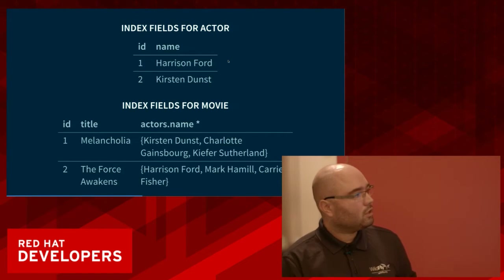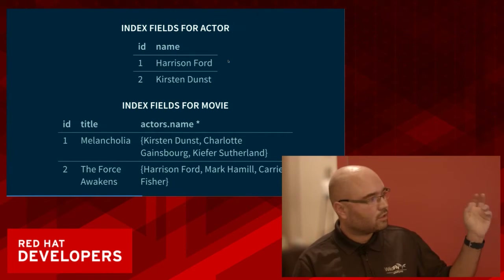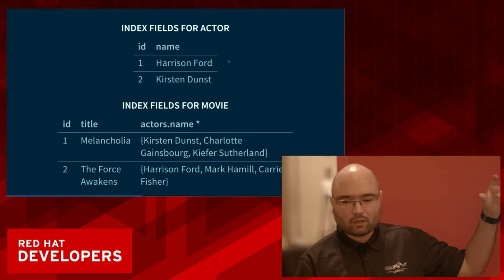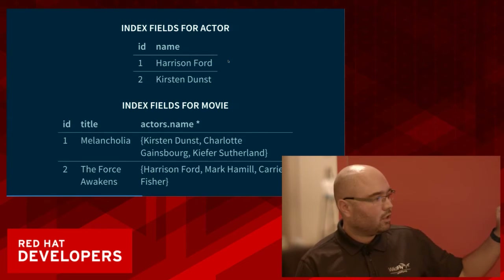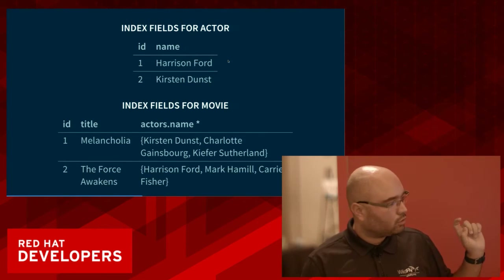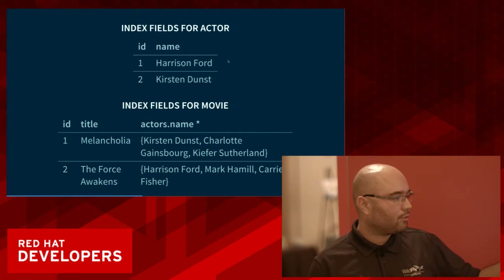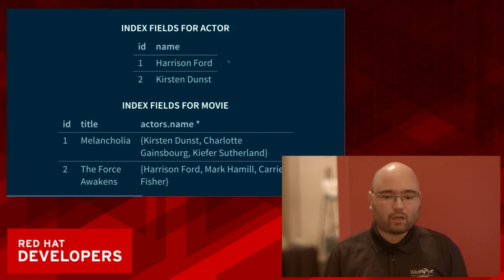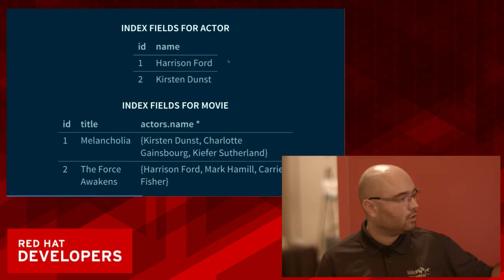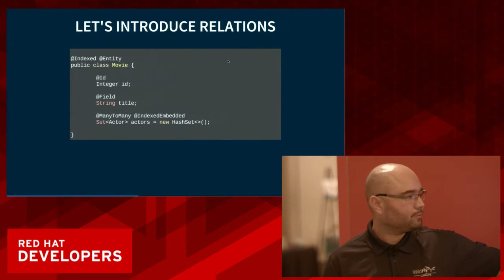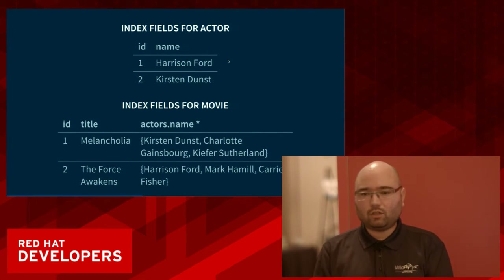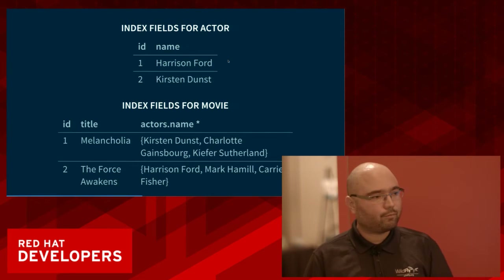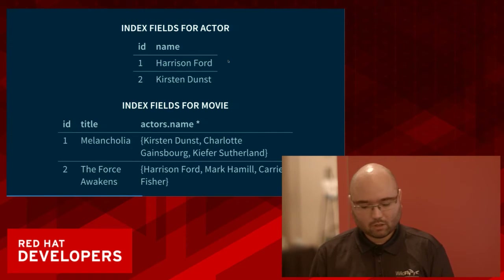Here's how that looks: two actors — Harrison Ford and Kirsten Dunst — will each have their own entry in the actors index. Then the movie index looks unusual: you might have a title but then multi-valued fields for the actors. Because the Lucene storage engine is not a relational database — it can have multiple values on the same field — that's how we map many-to-many relationships.